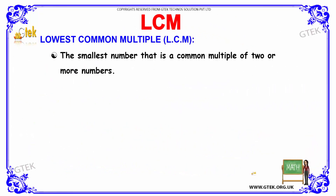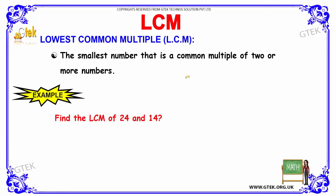Moving on, we are going to discuss about LCM. LCM is the abbreviation of Lowest Common Multiple, and it is the smallest number that is a common multiple of two or more numbers. This common multiple can be found for two numbers.